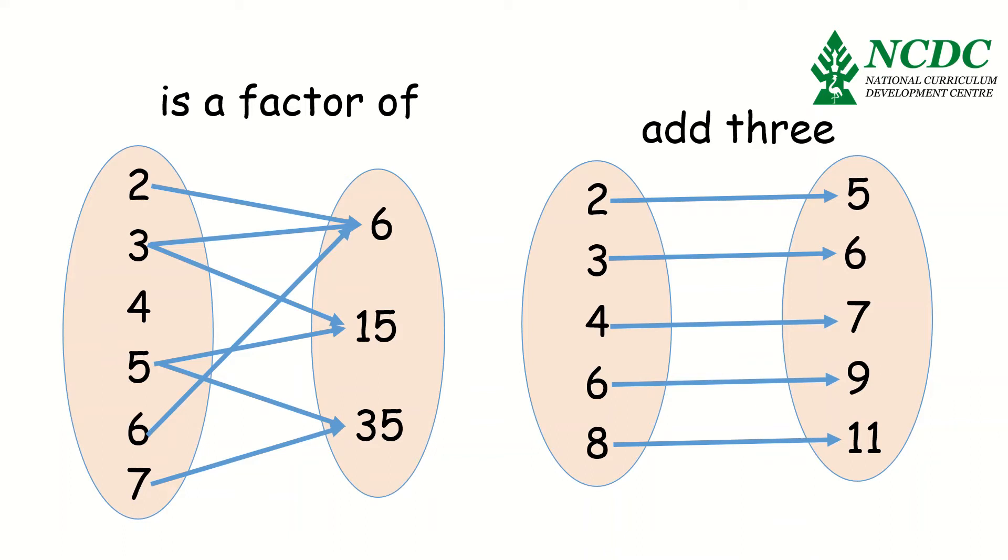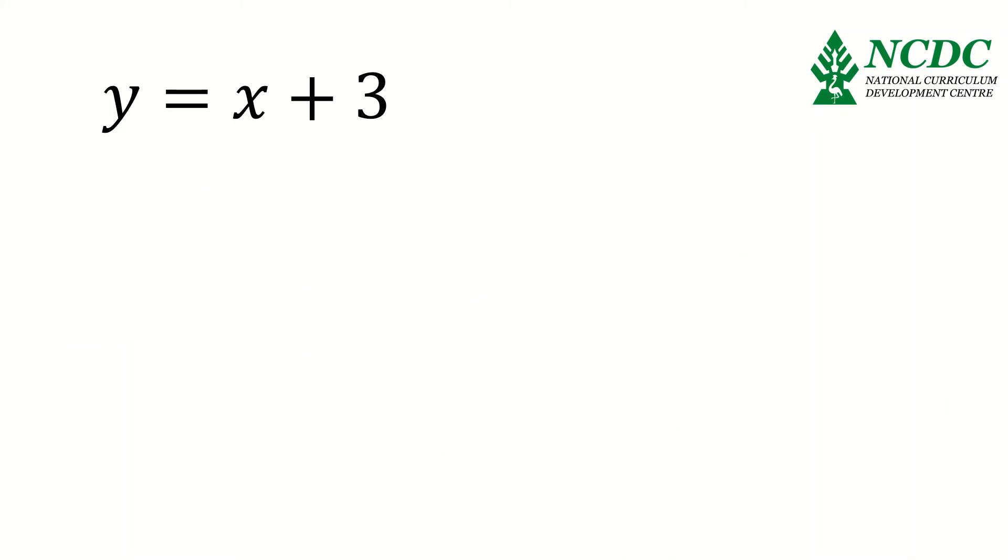There are cases when a relation statement can be given as an equation or a function. Here is one of such examples. If you have a relation statement, y is equal to x plus 3. This simply means that when x is equal to 0, your y value will be 3. How do you get a 3? Just substitute for x. Where x is, replace it with a 0. You have y is equal to 0 plus 3. And therefore, y will be 3.